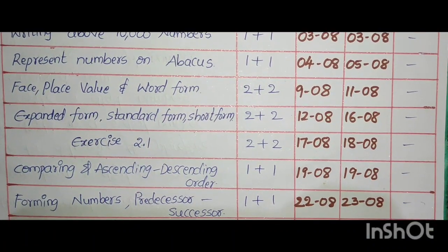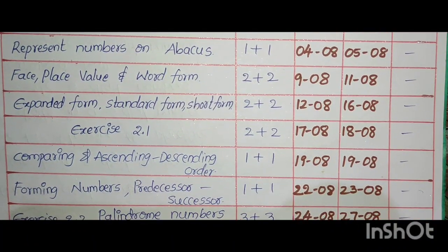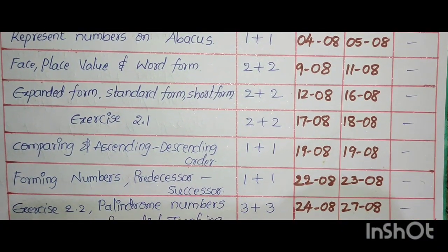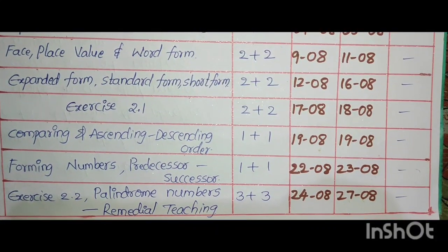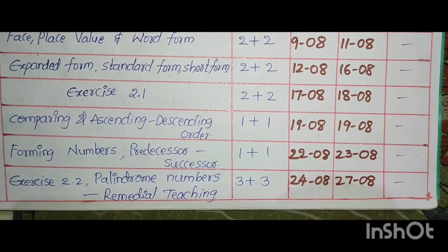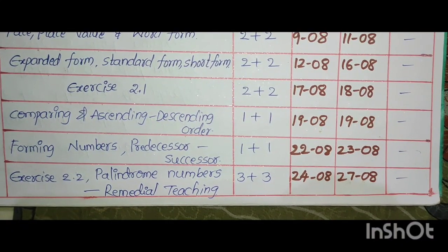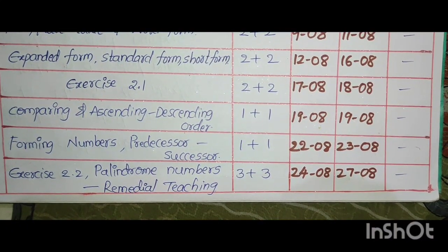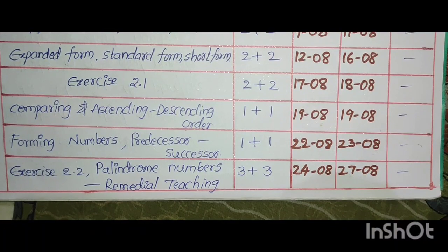Face, Place Value and Word Form, 2 plus 2, August 9 to August 11. Expanded Form, Standard Form, Short Form, 2 plus 2, August 12 to August 16. Exercise 2.1, 2 plus 2, August 17 to August 18. Comparing and Descending Order, 1 plus 1, August 19.